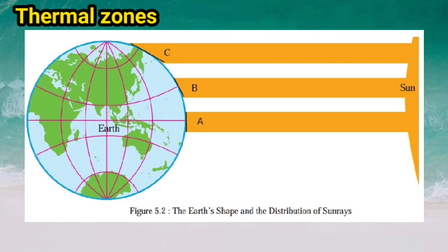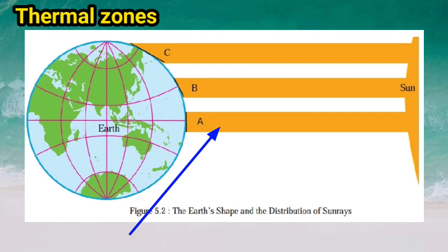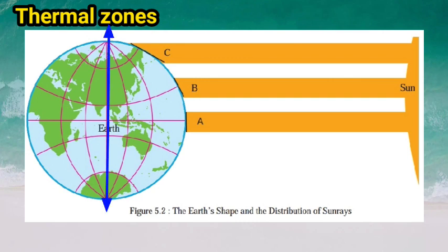Number one: due to the spherical shape and curvature of the Earth's surface, Sun rays occupy larger or lesser areas in different parts of the Earth. Sun rays are perpendicular near the equator, so they occupy a lesser area and the surface there is more heated. As we move further from the equator towards the north and south poles, the Sun rays become slanted and therefore occupy a larger area, and the surface there is less heated.